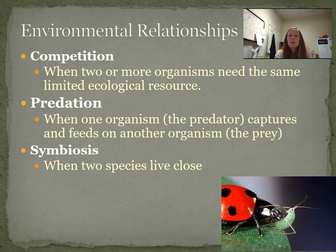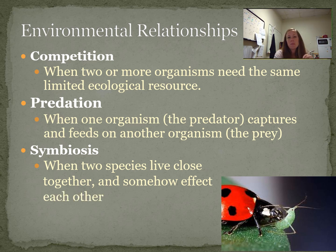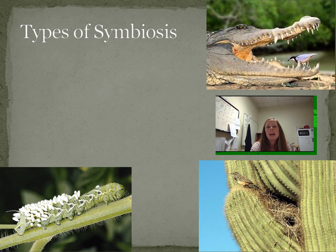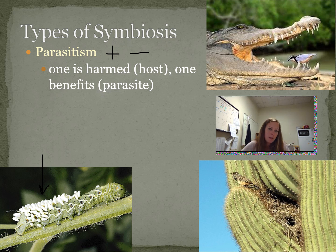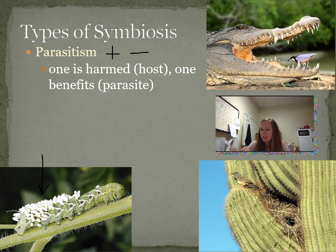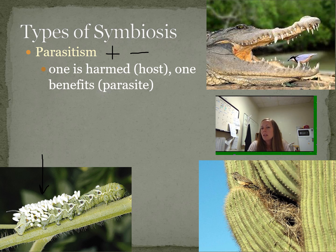Symbiosis is when two species live in close association with one another and somehow affect each other. The first type is parasitism — one benefits at the expense of the other, and one is harmed. For example, this tomato hornworm has hornet eggs on it; the larvae eat it from the inside out. Another example is a tick: it goes on a deer or a person, sucks blood, and lives there. Most of the time parasites don't kill their host — they just harm them.